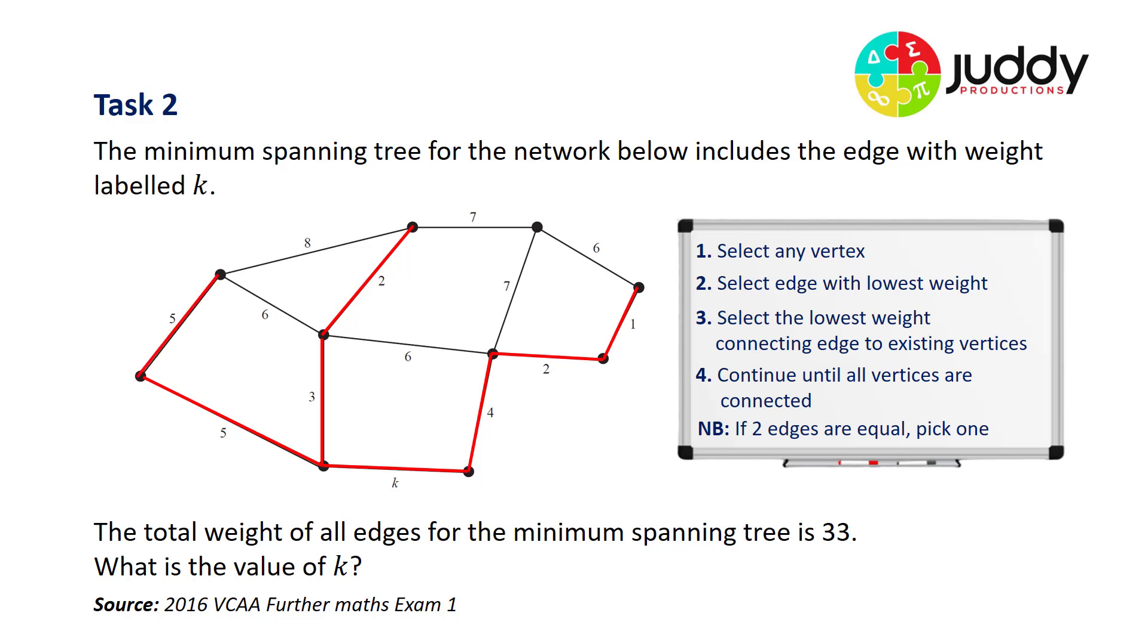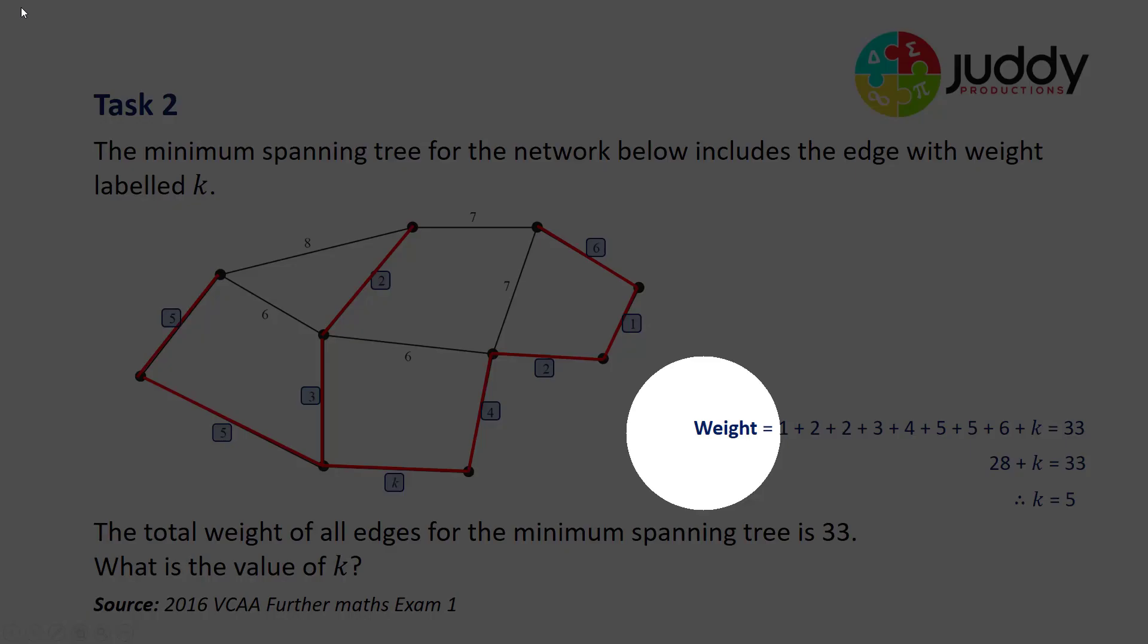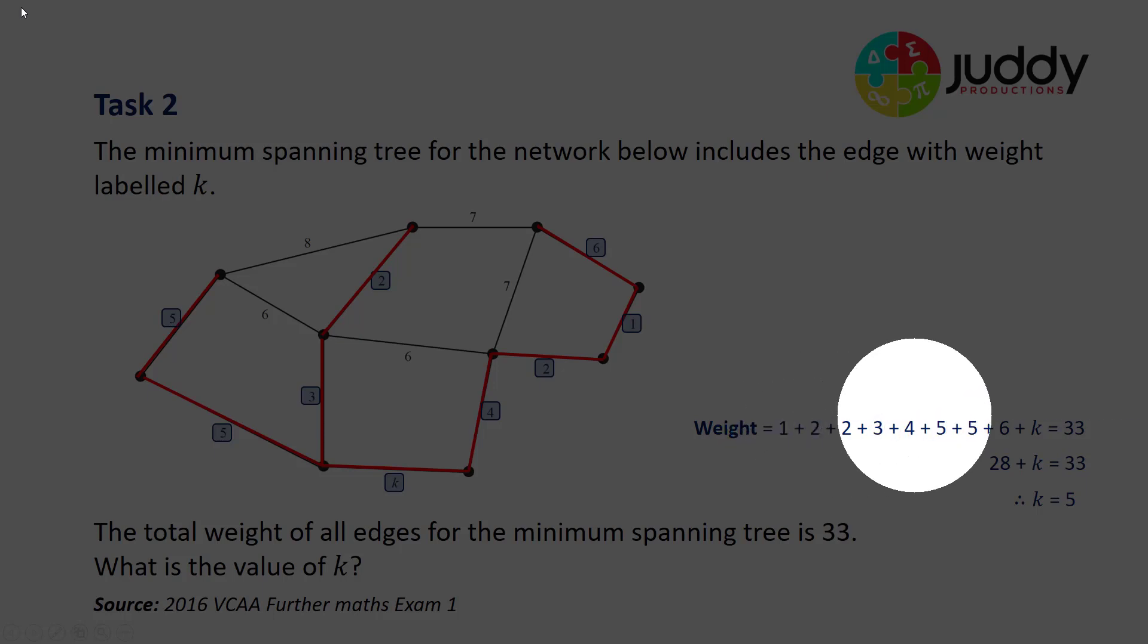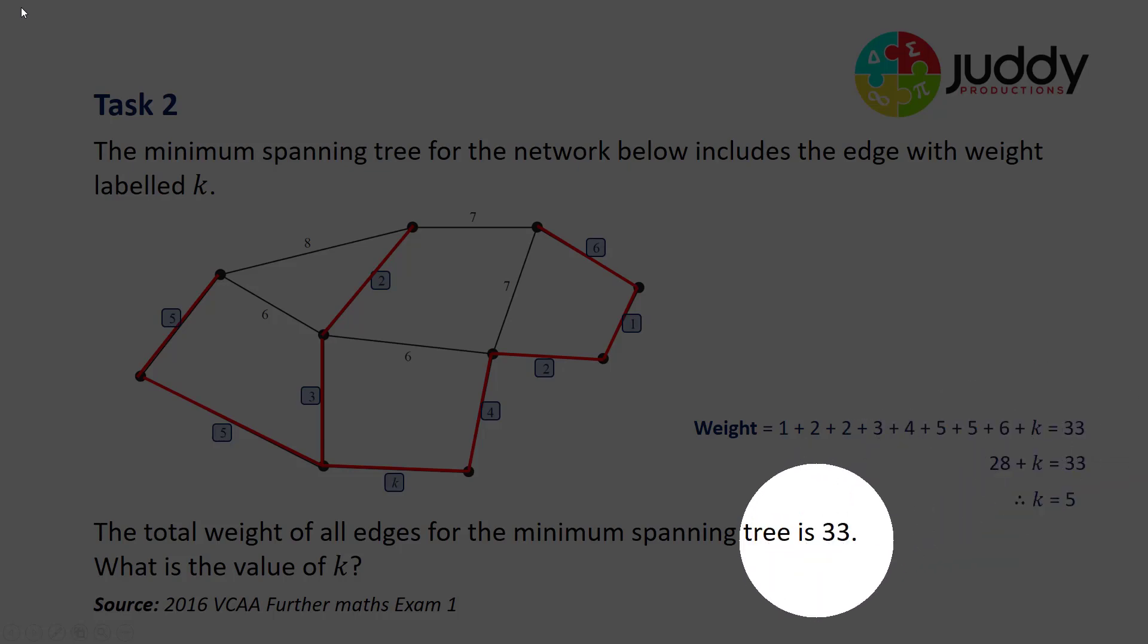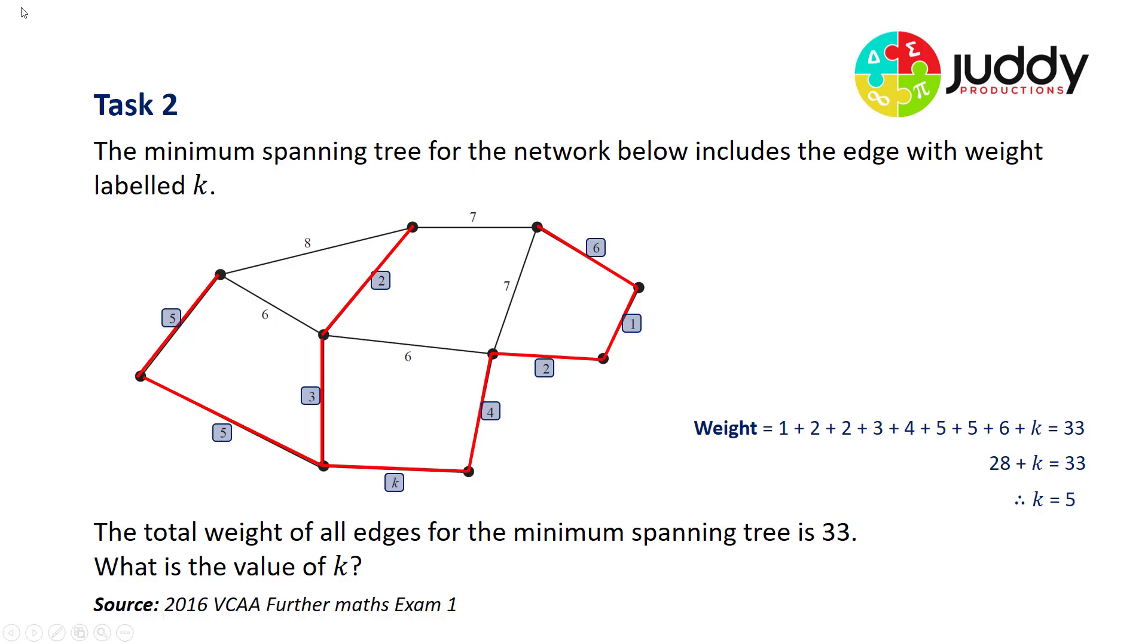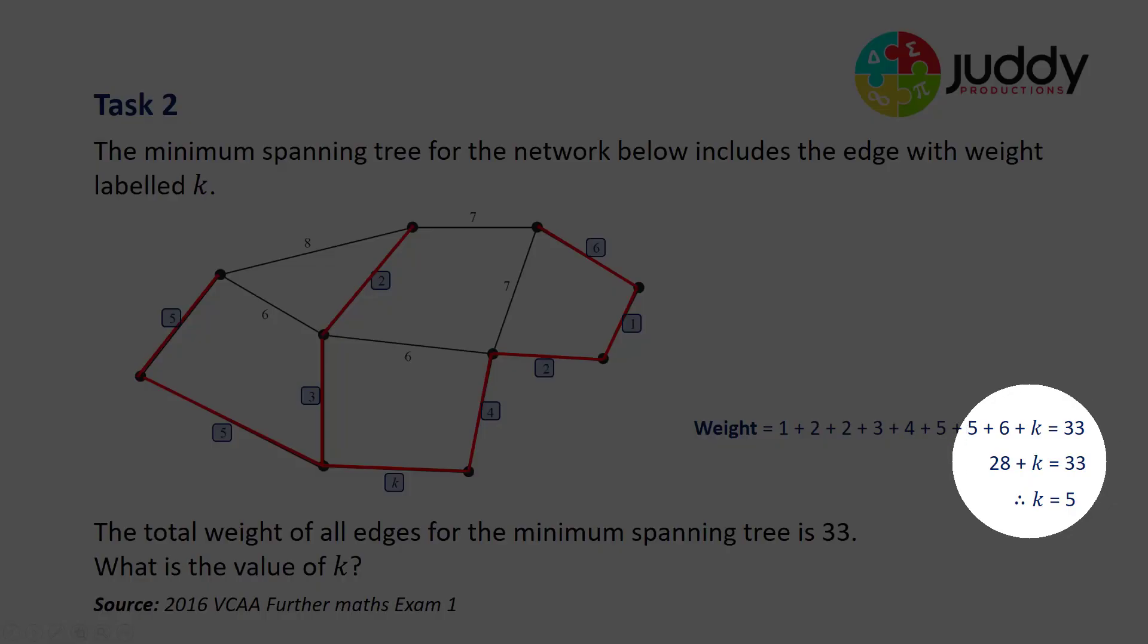Almost there. All vertices except for the top right are now connected. What's the lowest weighted edge remaining? Well, of all the vertices, the lowest weighted edge remaining is 6. So I connect that. We now have completed Prim's algorithm to find the minimum spanning tree. So the total weight is the sum of the edges 1 plus 2 plus 2 plus 3 plus 4 plus 5 plus 5 plus 6 plus K the unknown, and it equals 33 as stated in the question. When I tally all those individual edges up, I end up with a final statement of 28 plus K equals 33. So the weighting of the unknown edge K must equal 5.